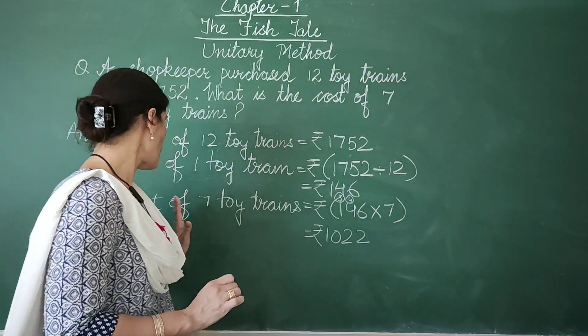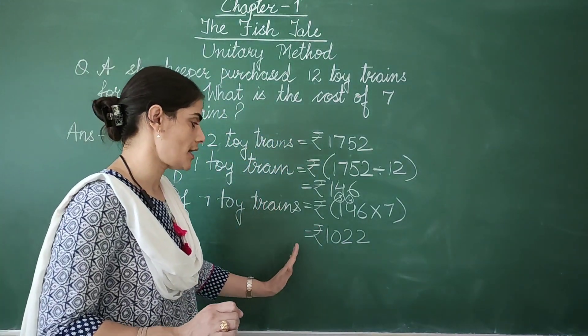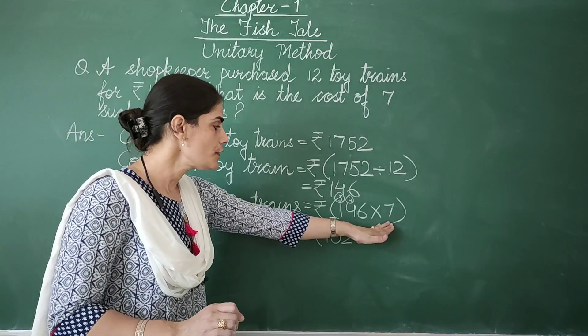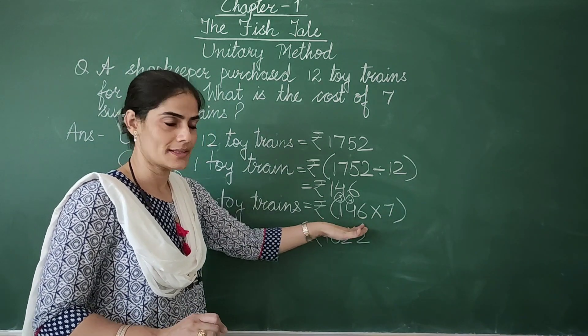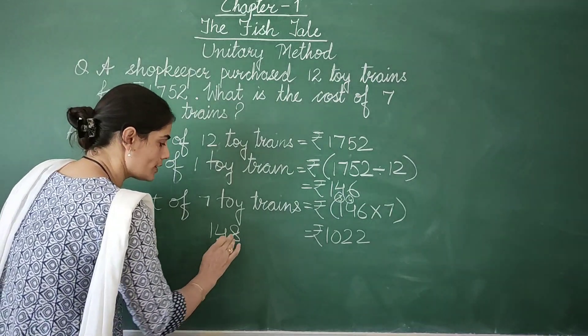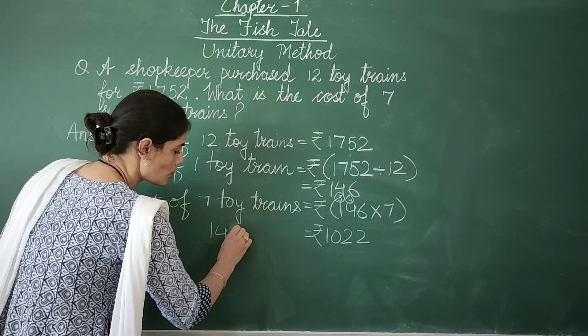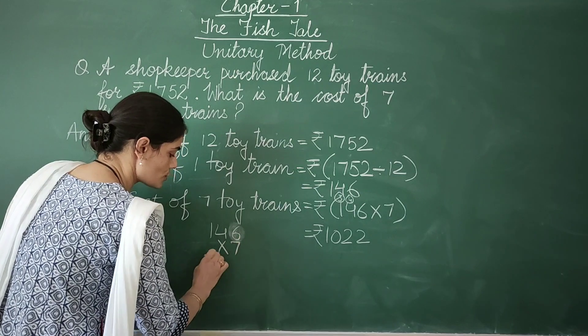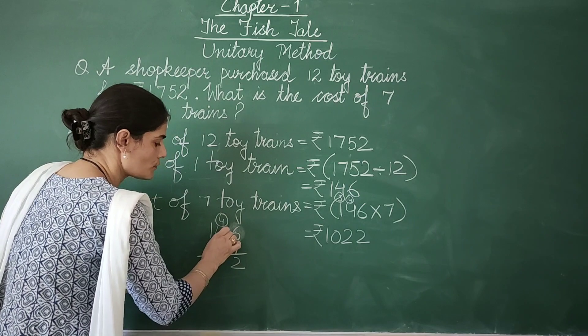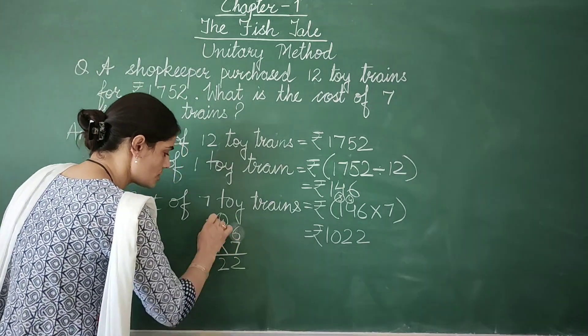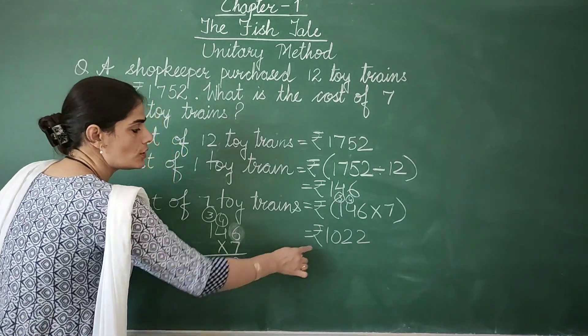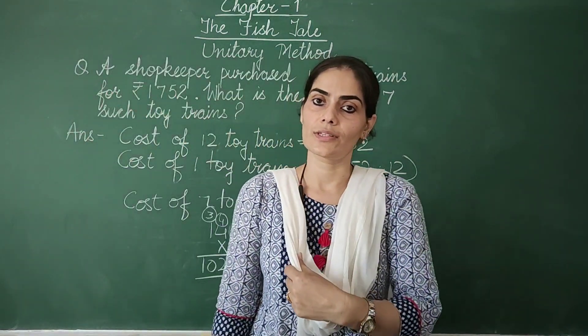So I have the answer cost of 7 toy trains is rupees 1022. If you don't know how to do it this way, you can do it by using column mechanism. So the cost of 1 toy train is 146, cost of 7 you can find like this. 7 sixes are 42, 4 you carry. 7 fours are 28, plus 4 is 32, 2 you carry, 3 you carry. And 7 ones are 7, plus 3 is 10. So we have got the answer as 1022.